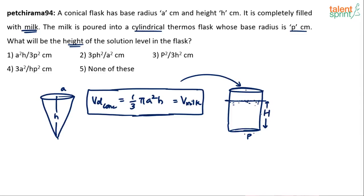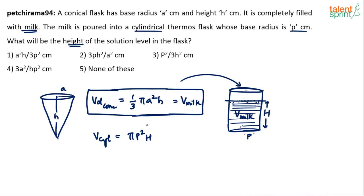The volume of the milk poured into the cylindrical flask must equal the volume of milk that was in the cone. The volume of the cylinder up to height h is πp²h, since the radius here is p. Setting this equal to the cone's milk volume: πp²h = (1/3)πa²h. The π terms cancel on both sides.